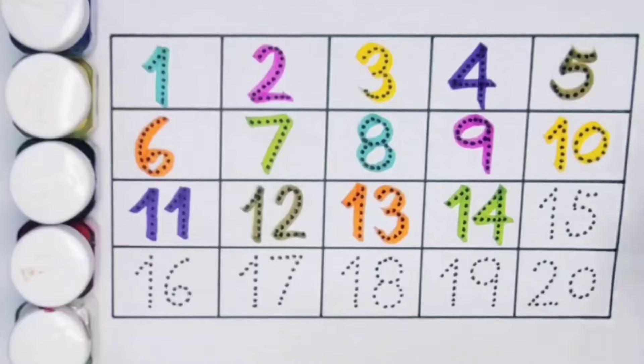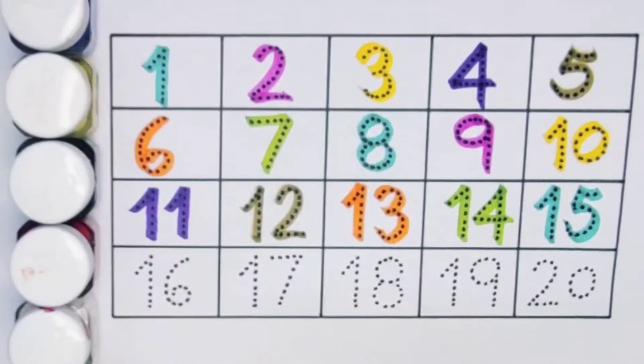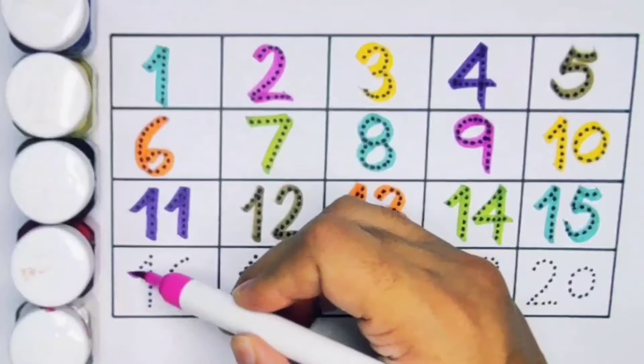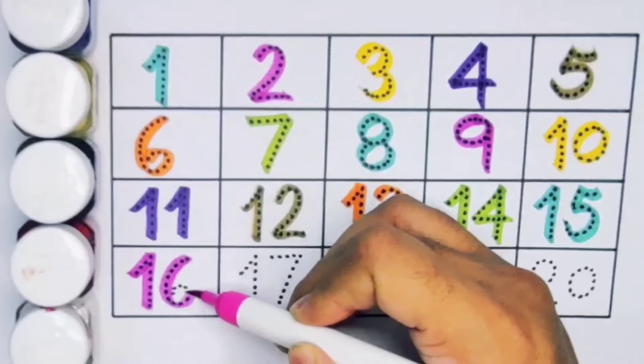Next kids 15, 1, 5. Number 15. Next kids 16, 1. Number 16.